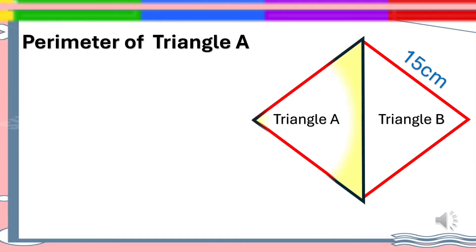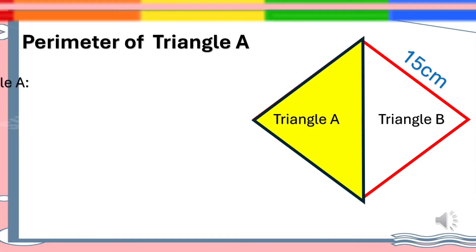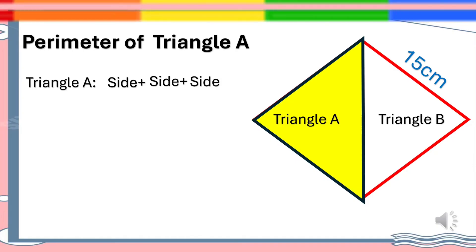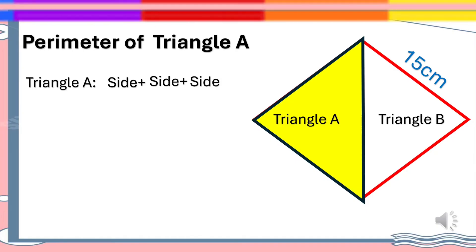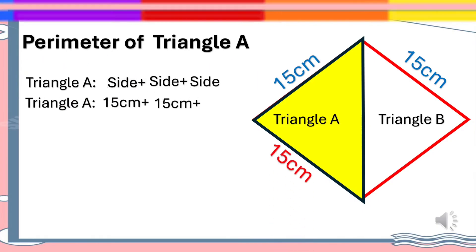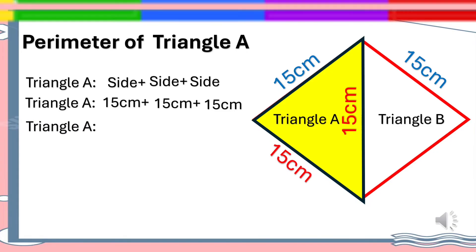Let's solve for the perimeter of Triangle A. Triangle A equals side plus side plus side. Since a rhombus has four equal sides, dividing it into two triangles gives each triangle three equal sides. So P equals 15 cm plus 15 cm plus 15 cm. Adding all sides of Triangle A gives 45 centimeters. Therefore, the perimeter of Triangle A is 45 centimeters.